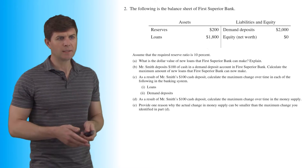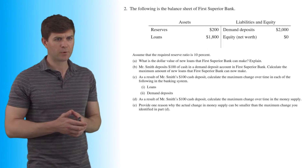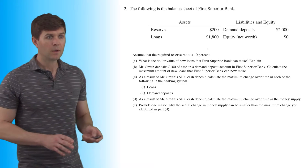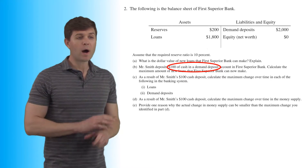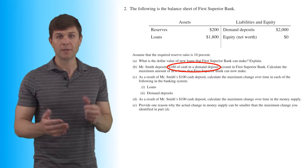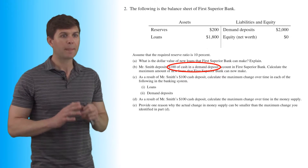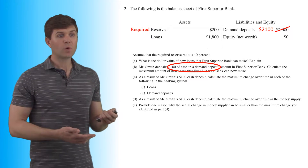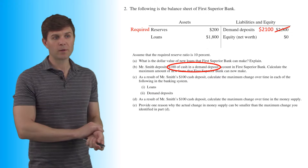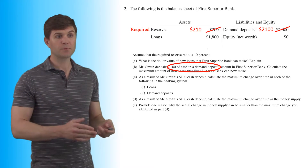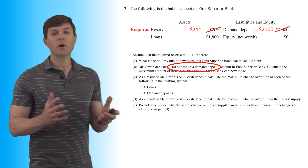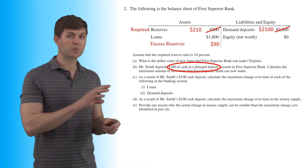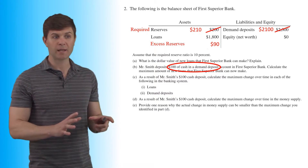Part B: Mr. Smith deposits $100 cash into a demand deposit account at First Superior Bank. That brings demand deposits from $2,000 up to $2,100. Our required reserves increase from $200 to $210. Only 10% of that new deposit goes to required reserves, leaving $90 in excess reserves.